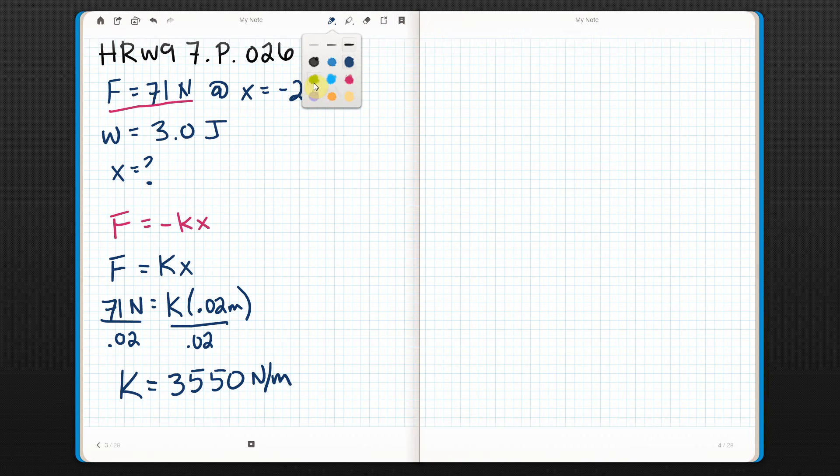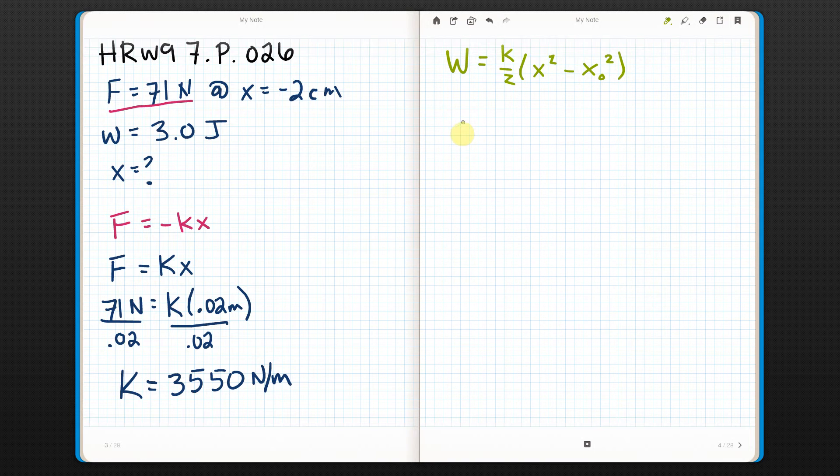So now I'm going to slowly, starting from rest and ending at rest again, move the block, and I do 3 joules of work. Well, I know that when I apply a force, the work done is equal to k over 2 times the difference between its final position squared minus initial position squared. This is when I'm applying the force. This would be reversed if I wanted to know what work the spring did on the system.